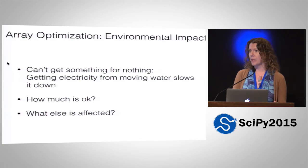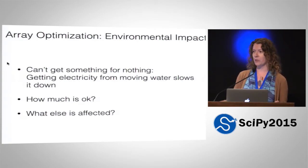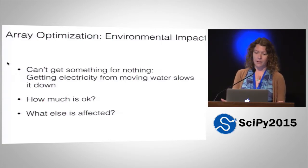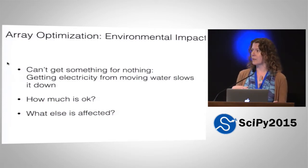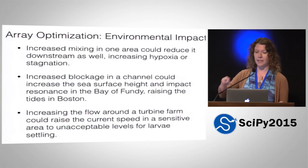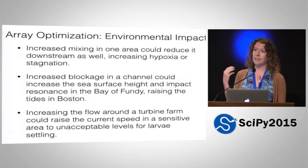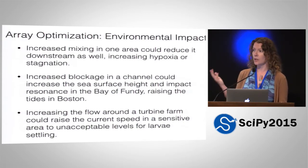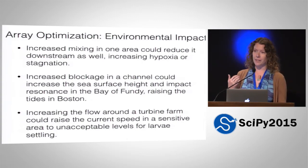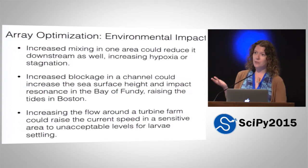What I'm bringing to the table is thinking about environmental impact from your turbine array. You can't get something for nothing — if you're generating electricity from moving water, you are going to be slowing down the water. So how much slowing it down is okay? Does it matter where it slows down? How do you measure that best? And what other properties are affected? Increasing mixing in one area — which you might be doing by moving a turbine around — could reduce mixing downstream. And sometimes downstream is an area that's already considered fairly stagnant, or maybe you have some hypoxia issues where you have low oxygen.